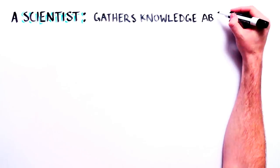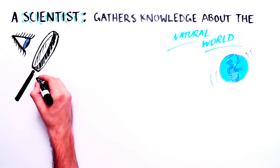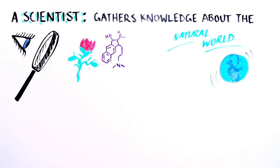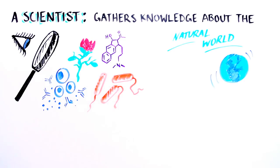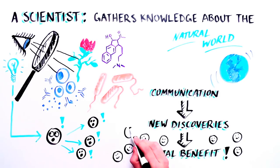A scientist's job is to obtain knowledge about the natural world. Sharing that knowledge is critical for scientific progress, as new information produced by one scientist can be used by others to make new discoveries and further benefit society.